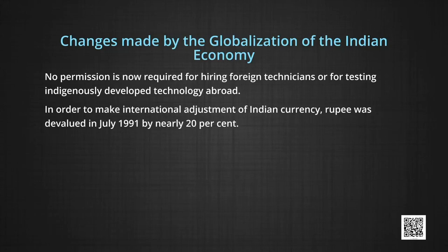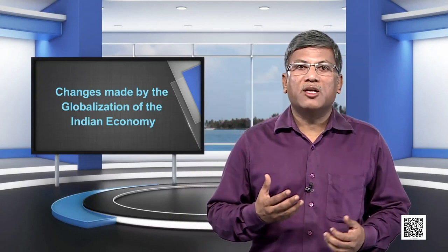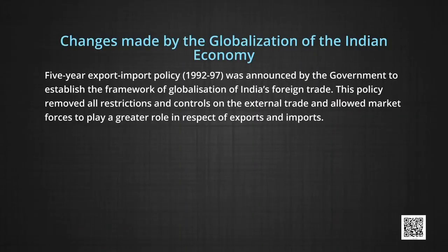In order to make international adjustment of Indian currency, the rupee was devalued in July 1991 by nearly 20 percent. It stimulated exports, discouraged imports, and raised the influx of foreign capital. To integrate the economy with the world, the union budget 1992-93 made the Indian rupee partially convertible. The rupee was made fully convertible in only current account transactions in the 1993-94 budget. A five-year export-import policy covering 1992-97 was announced by the government to establish the framework of globalization of India's foreign trade.